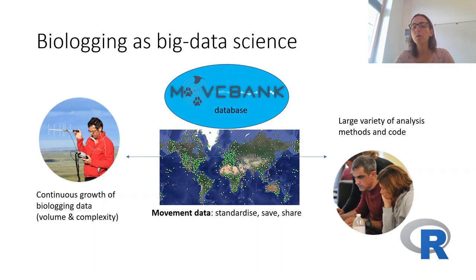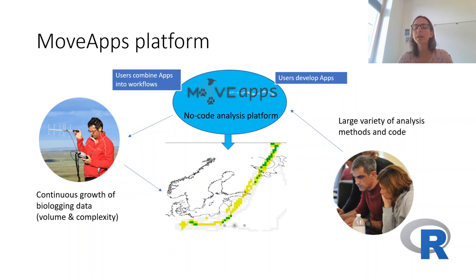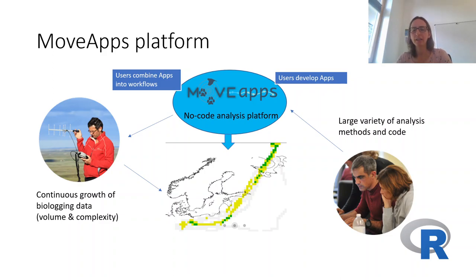Much of this analysis code is shared as R packages in R, but as we are aware that work with R is not easy for everybody, we have gone ahead and developed the MoveApps platform, which is meant to bring together people that are collecting tracking data and people that are analyzing them and developing code. It works in a way that developers put their analysis code into small apps that are submitted to MoveApps, where they can then be used by all MoveApps users and combined into workflows with which biologging data can be analyzed.